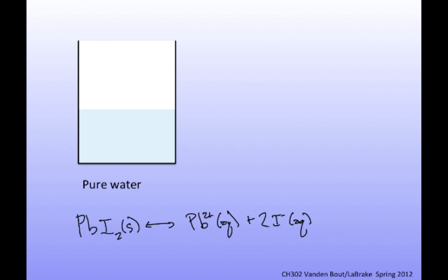Lead(II) iodide is an insoluble yellow salt. I'll imagine putting some solid lead(II) iodide into the solution — mostly what will happen is I'll get a chunk of solid yellow material on the bottom of the container. A very tiny amount of that solid will dissolve, and I'll end up with a few lead ions floating around in solution, and for every lead ion I get, I'll end up with a couple of iodide ions floating around in solution.